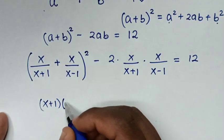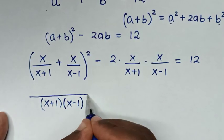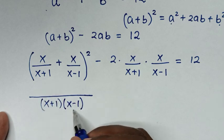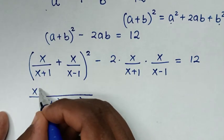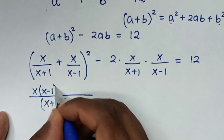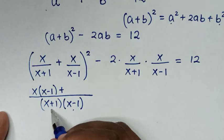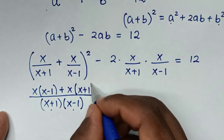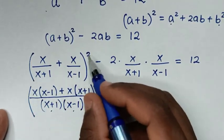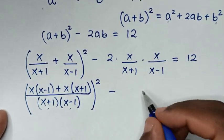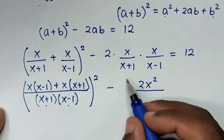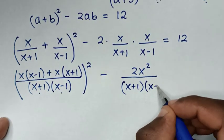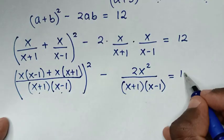The LCM of (x+1) and (x-1) is (x+1)(x-1). Dividing (x+1)(x-1) by (x+1) gives (x-1), so the first numerator term is x(x-1). Dividing by (x-1) gives (x+1), so the second term is x(x+1). That whole bracket is squared, minus 2·x·x = 2x², over (x+1)(x+1)(x-1)(x-1), equals 12.